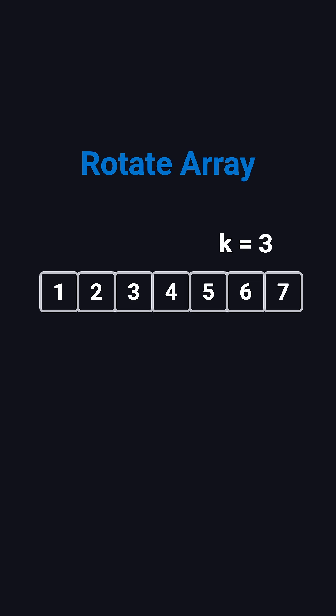Here's the problem. You're given an array of length n and an integer k. You need to rotate the array to the right by k steps. That means every element moves k positions to the right, and the elements at the end wrap around to the front.